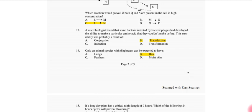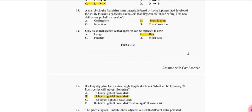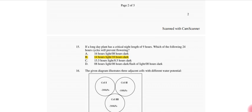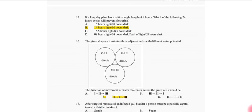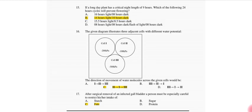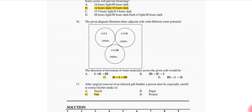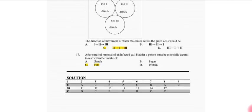Only an animal species with diaphragm can be expected to have lungs. If a long day plant has a critical length of 9 hours, which of the 24 hour cycles will prevent flowering? So that is 14 hours light, 10 hours dark. The given diagram illustrates 3 adjacent cells with different water potential. The direction of movement of water across the cells: water will move from more to less concentration.